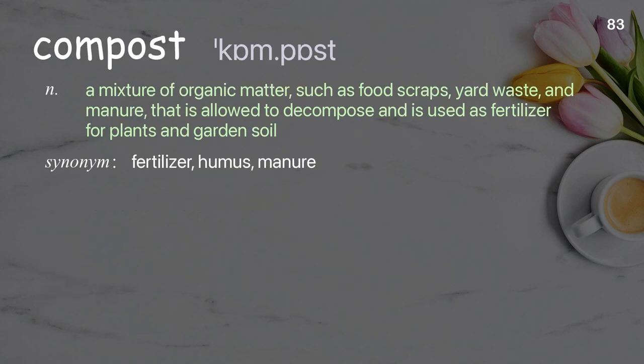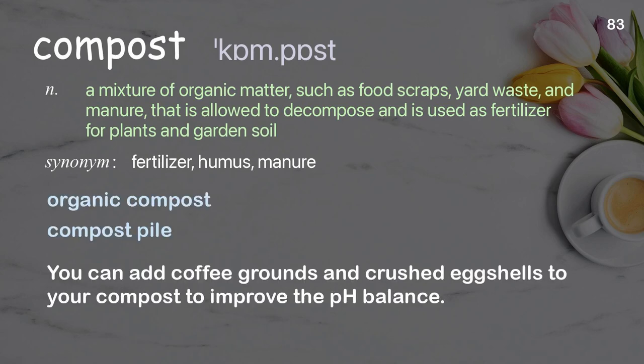Compost: A mixture of organic matter, such as food scraps, yard waste, and manure, that is allowed to decompose and is used as fertilizer for plants and garden soil. Examples: Organic compost. Compost pile. You can add coffee grounds and crushed eggshells to your compost to improve the pH balance.